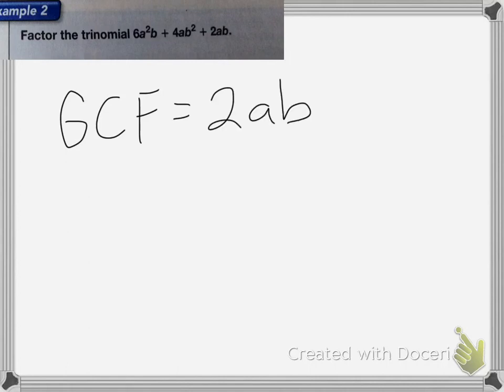So next we're going to divide all of each term in the trinomial by 2ab to find what remains of each term after 2ab is factored out of the expression.